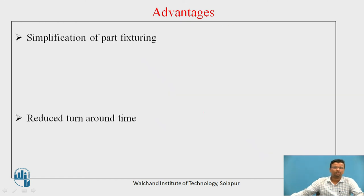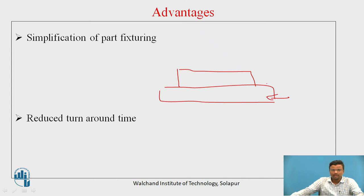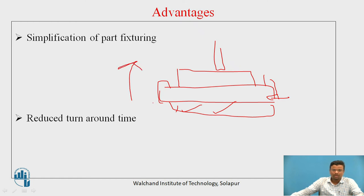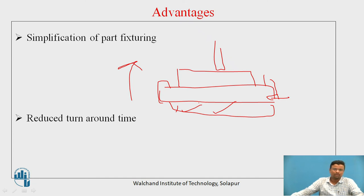The second advantage is simplification of part fixturing. In conventional processes, when machining a product, you need fixtures to hold it in place. If you need to operate on a different surface, you have to rotate, invert the product, and use another fixture. Different types of fixtures are needed in conventional manufacturing. In additive manufacturing, there is no need for fixtures to hold the workpiece — different types of build platforms are used to hold the workpiece instead.